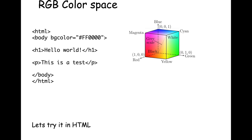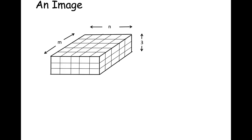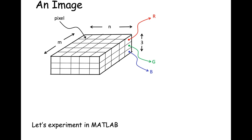An image is a pixel array — M by N pixels — in three dimensions. The red component, green component, and blue component are color channels. The red channel represents the amount of red from 0 (no red) to 255 (FF hexadecimal, full red). You can imagine this M by N array as having three slices: the red plane, the green plane, and the blue plane.